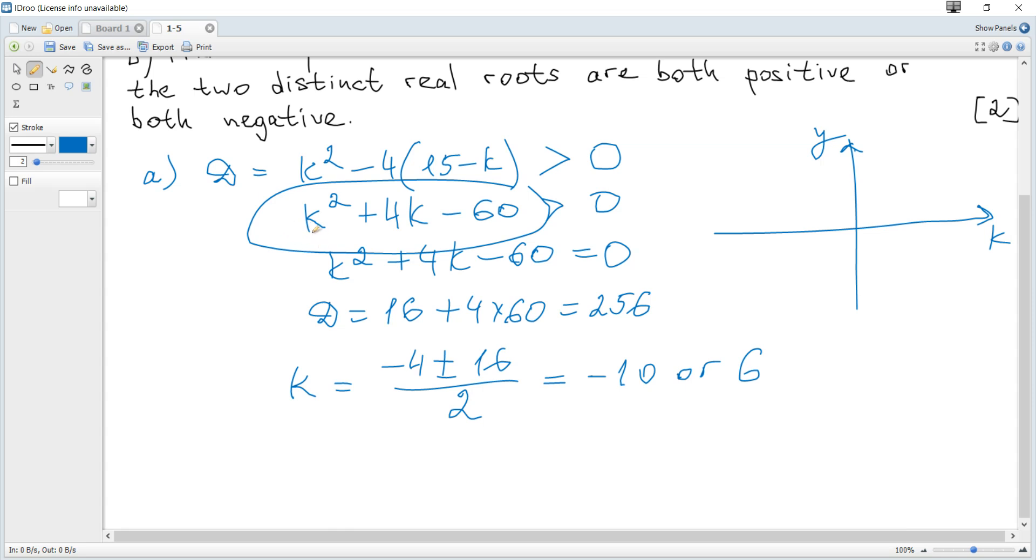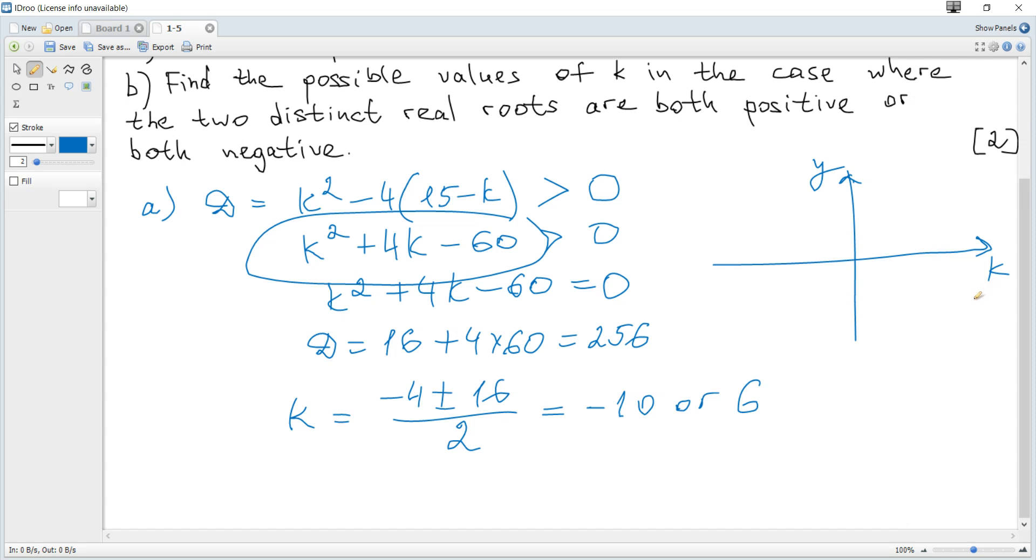The roots are the k-intercepts, so they're at -10 and 6. It looks like this.